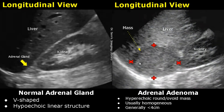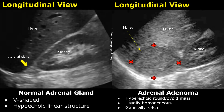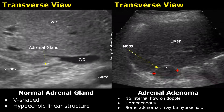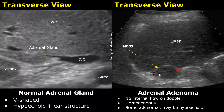An adrenal adenoma is a benign tumor involving the adrenal gland and has variable appearances. In this image, it is a hyperechoic, round and ovoid mass with a homogeneous echo texture. It is well circumscribed, and we will not find any internal flow on Doppler.